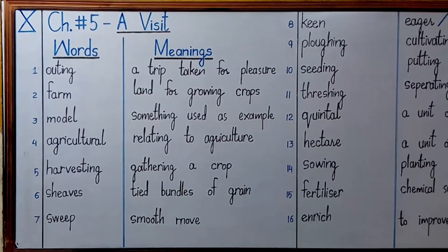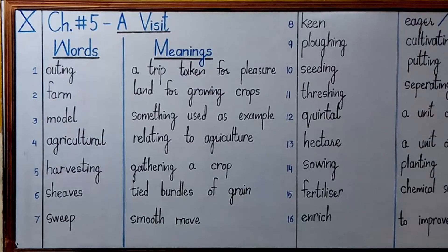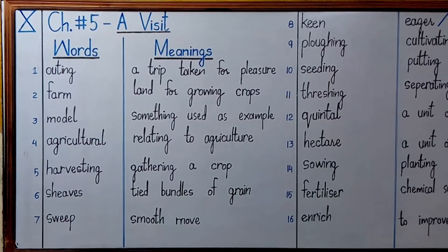Number three is 'model'. It means something used as an example. When we say 'model paper', it means a paper which is used as an example of the annual examination paper. In metric class you will get a model paper at the end of the year — a paper similar to the actual annual examination paper, as we did in your ninth class. So model means something used as an example.